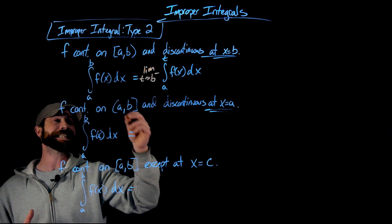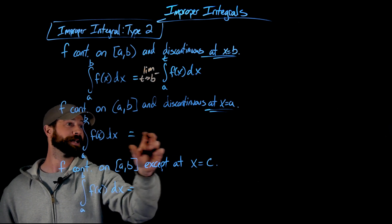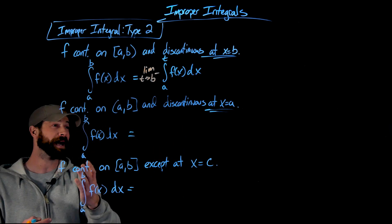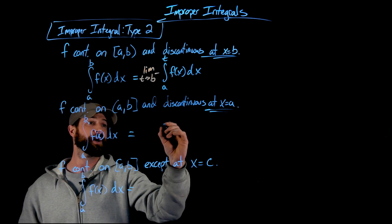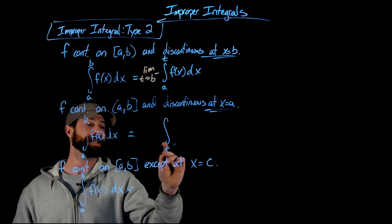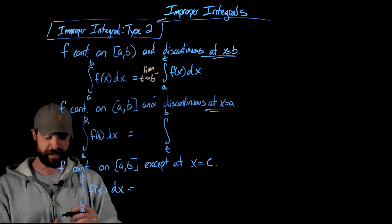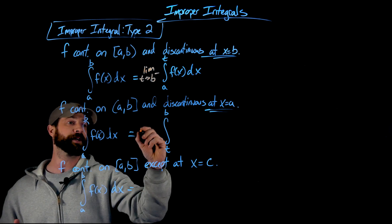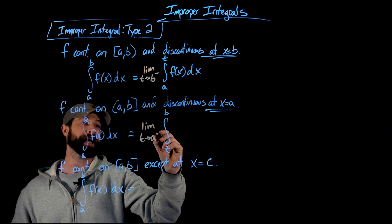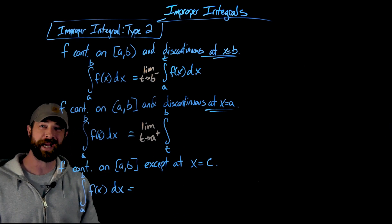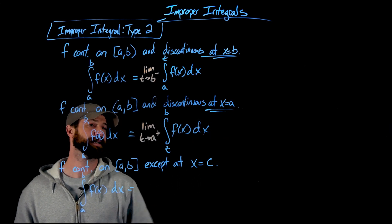Similarly, if we have an integral where the function is discontinuous at the lower bound but continuous everywhere else, we do the same trick: put a t at the lower bound, keep our b, and in this case we're looking for the limit as t approaches a from the right.